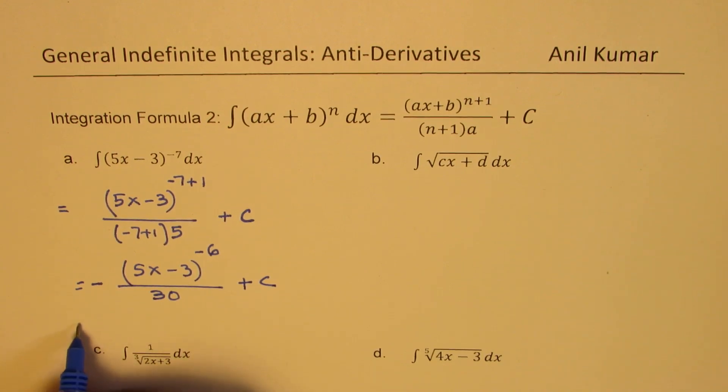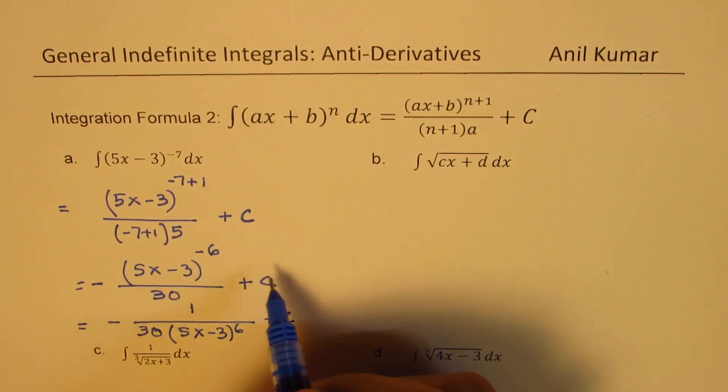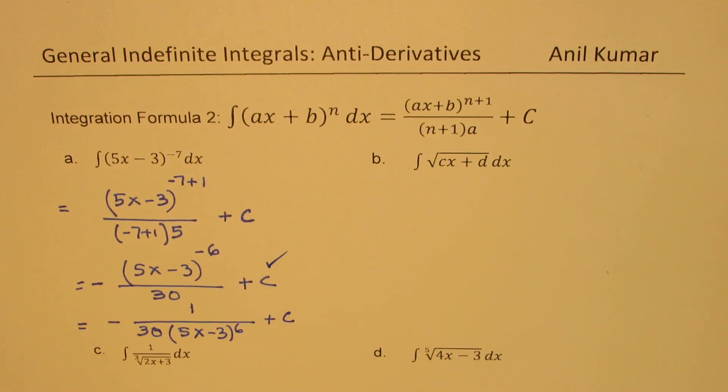We can write here negative, and minus 6 times 5 is 30 plus C. That becomes your final answer. At times, you may write this answer with the denominator inverted, but this is good enough. Sometimes people may write this as minus 1 over 30 times 5x minus 3 to the power of 6 plus C.